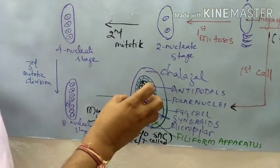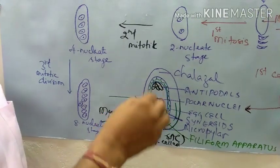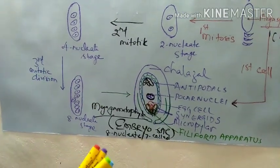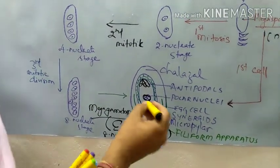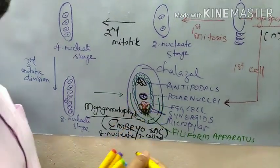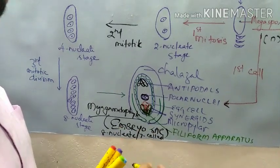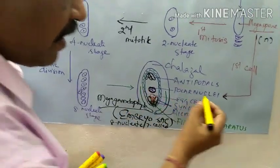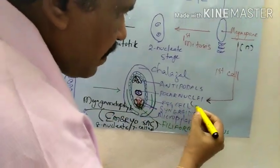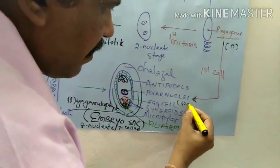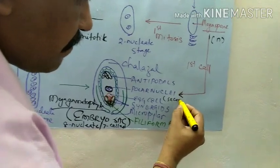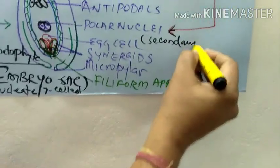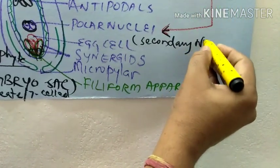The 2 polar nuclei will fuse and form one structure — that is called the secondary nucleus. When the 2 polar nuclei fuse they form a single cell called as secondary nucleus.